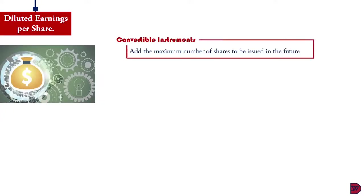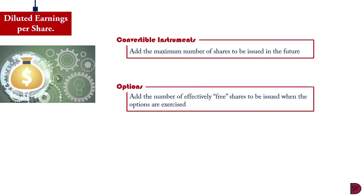More on diluted earnings per share. For convertible instruments, we have to add the maximum number of shares to be issued in the future. For options, we add the number of effectively free shares to be issued when the options are exercised.